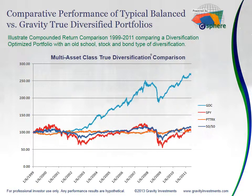Especially since we didn't have any real performance selection criteria in our selection process when we picked those investments — we just picked them based on having lived for 10 years and being the cheapest. We just liked Lipper's Global Classification Scheme, which has a pretty granular approach. We know that following that classification scheme would offer the potential for pretty strong diversification.